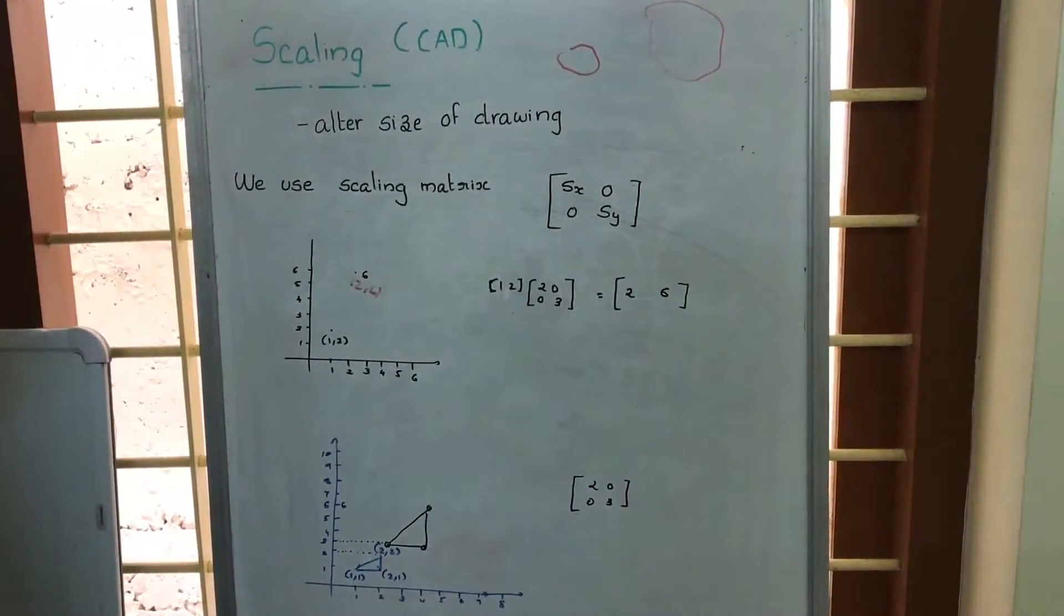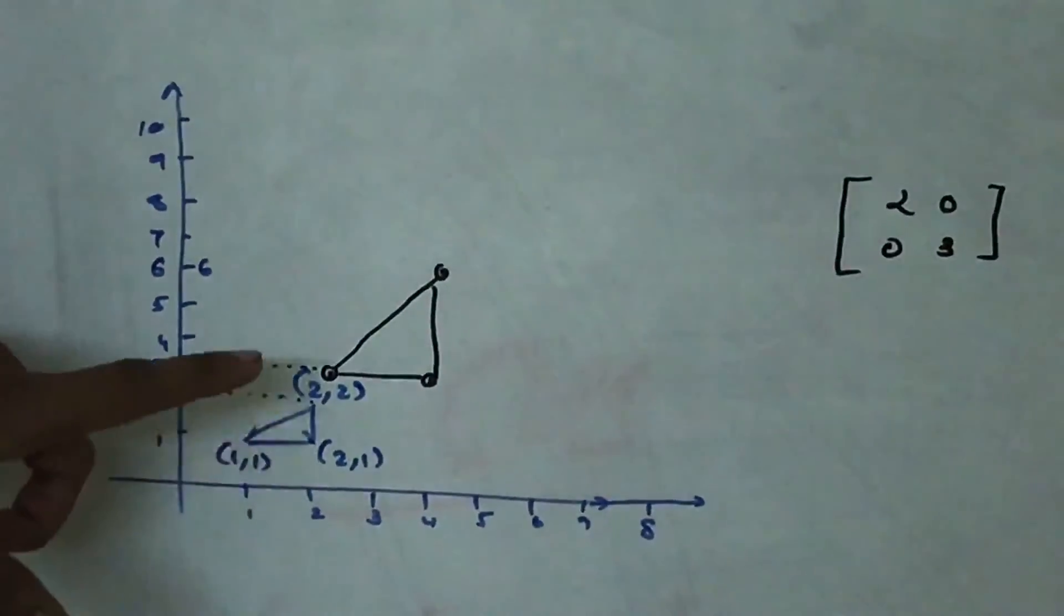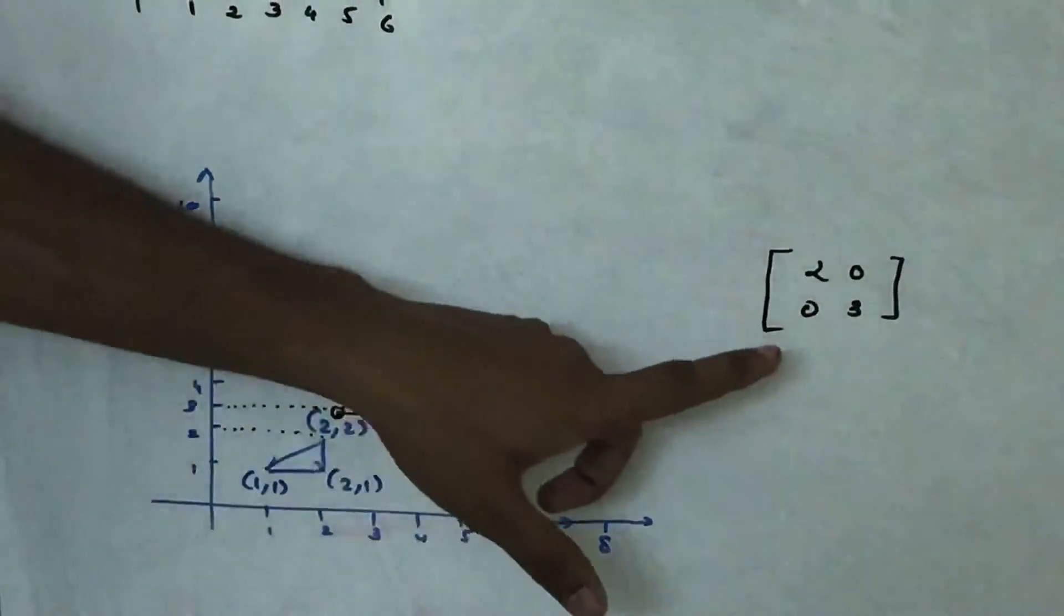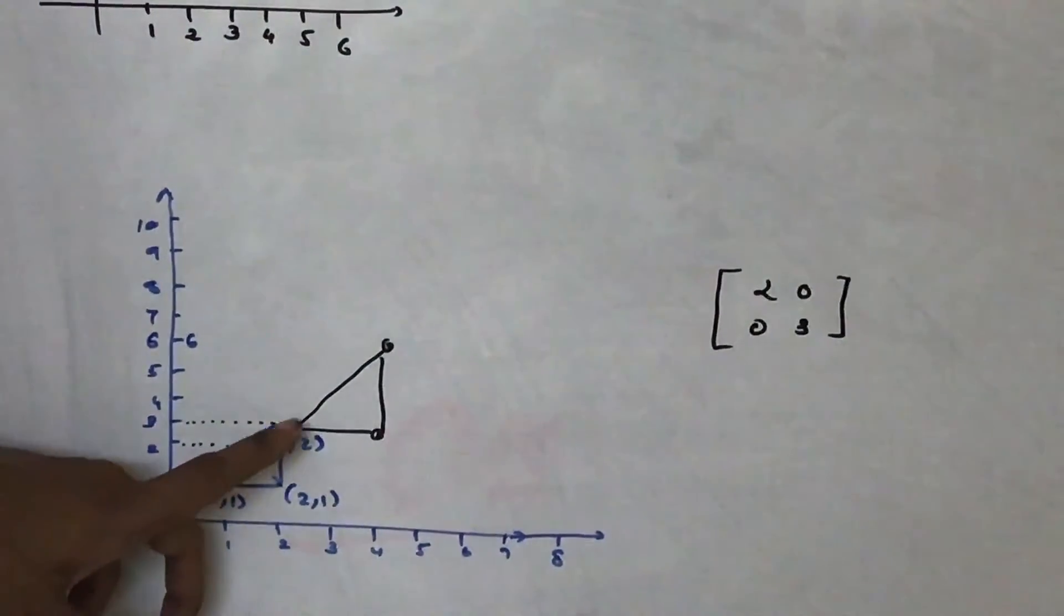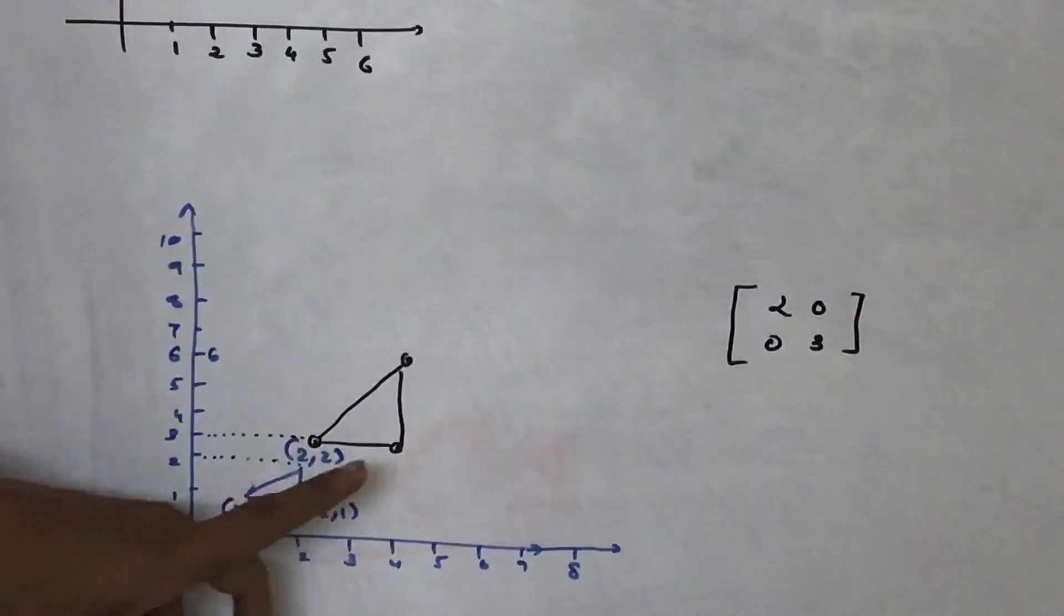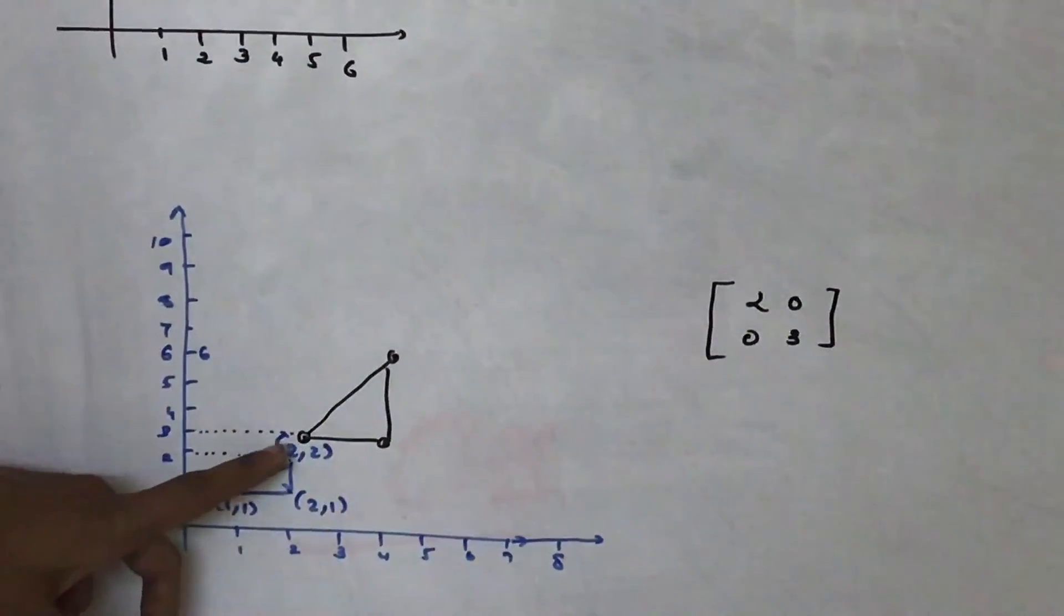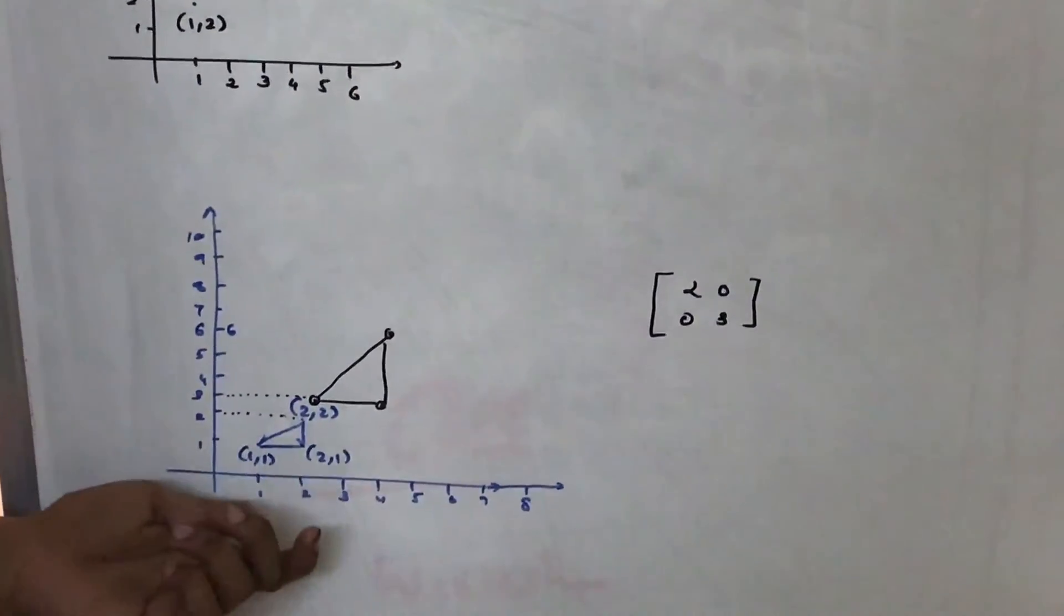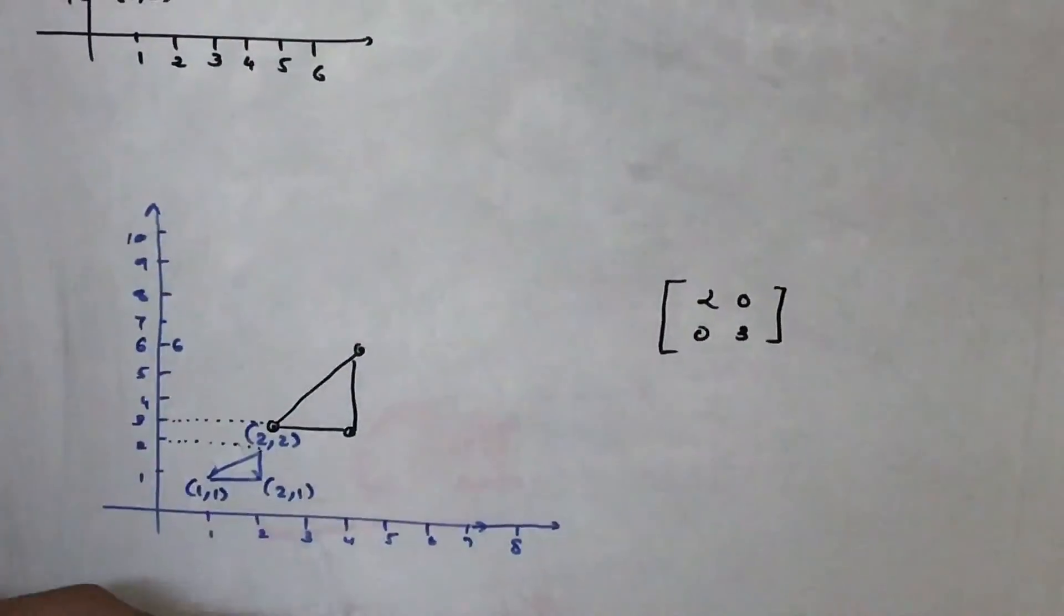Now the use is suppose if we are having a triangle whose vertices are 1,1, 2,1, and 2,2 and if we are multiplying the vertices of this triangle with the scaling matrix, 1,1 changes to 2,3. Similarly this is 2,3 and this one 2,1 changes to 4,3 and 2,2 changes to 4,6. So this small triangle when we are multiplying it with the scaling matrix we are able to increase its size.